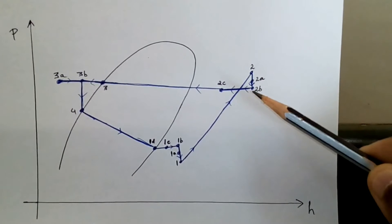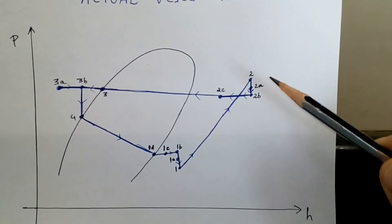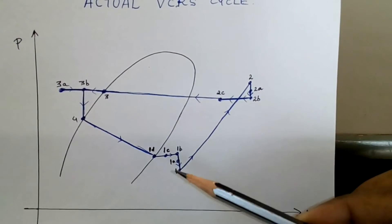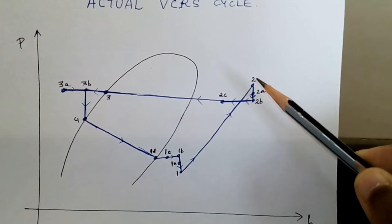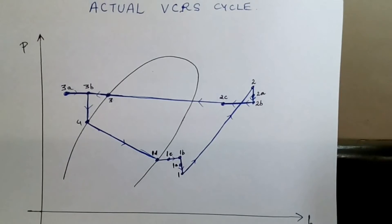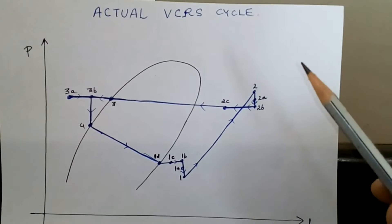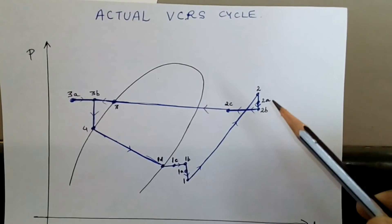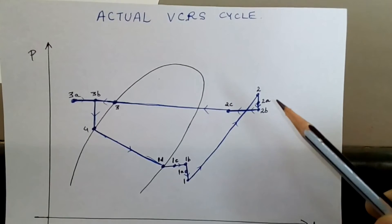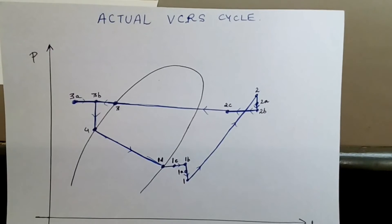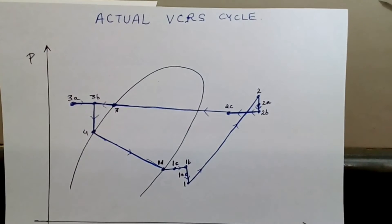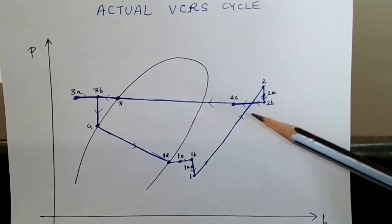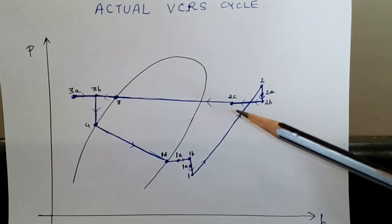From 2 to 2a there is a pressure drop at the exit valve of the compressor. From 2a to 2b there is a pressure drop in the delivery line. From 2b to 2c there is desuperheating, where heat is removed.